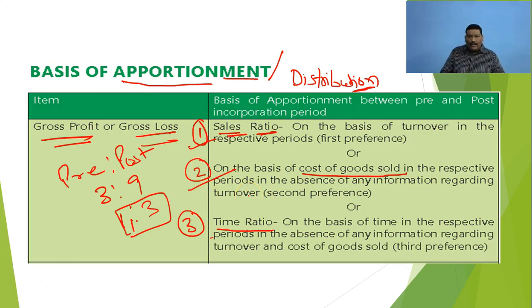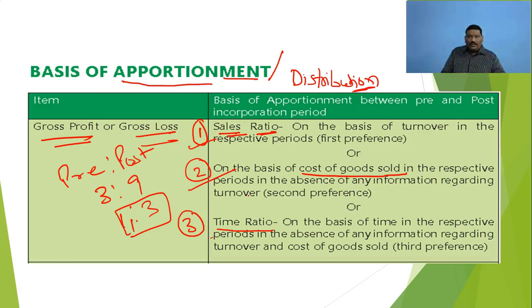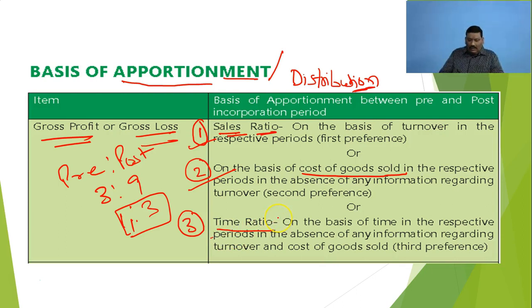We can easily calculate the time ratio because every time in every question the date of incorporation is definitely given. So time ratio calculation is not very difficult, it is very easy. This is our first point.